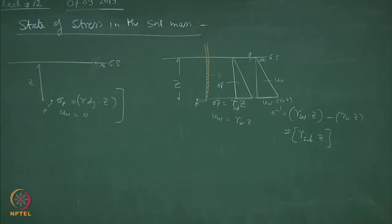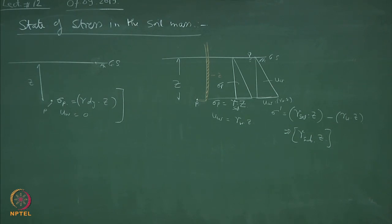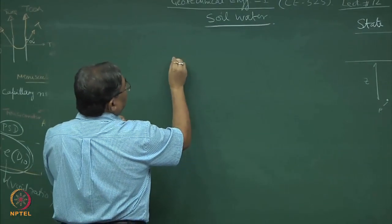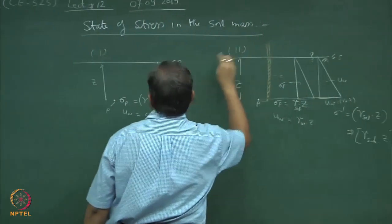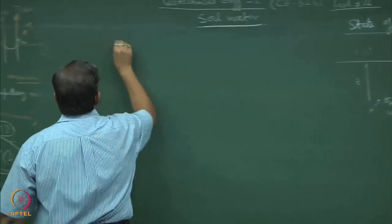The third situation could be when you have a partially saturated system. So this is situation number 1, situation number 2, situation number 3. Ever wonder why buildings collapse in Bombay city during rains? The answer comes from here.